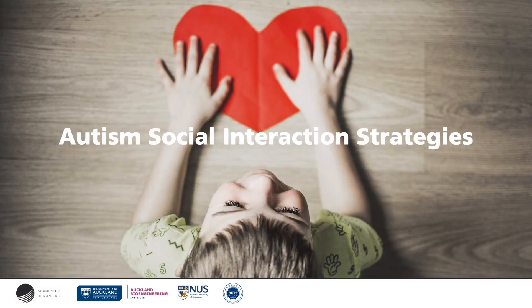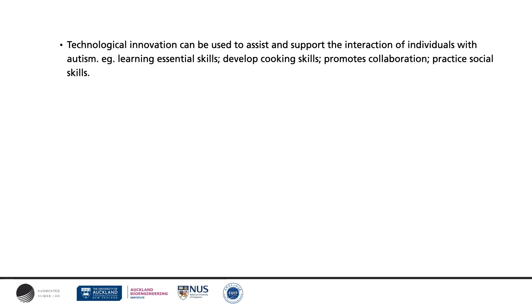Social interaction means knowing how people are expected to act in certain situations, including interaction with other people. For people on the autism spectrum, a common theme is having difficulty with social interaction and interpreting other people's behavior — such as knowing what to say or how to behave around others. Technical innovation can be used to support the interaction of people with autism.